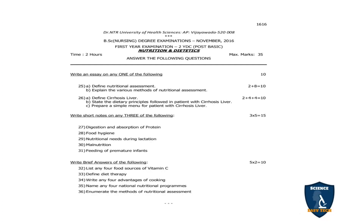Short notes: out of 5, answer 3. Topics are: digestion and absorption of protein; food hygiene; nutritional needs during lactation; malnutrition; feeding of premature infants. Brief answers (2 marks each): list any 4 food sources of vitamin C; define diet therapy; write any 4 advantages of cooking; name any 4 national nutritional programs; enumerate the methods of nutritional assessment. All five are 2-mark questions.